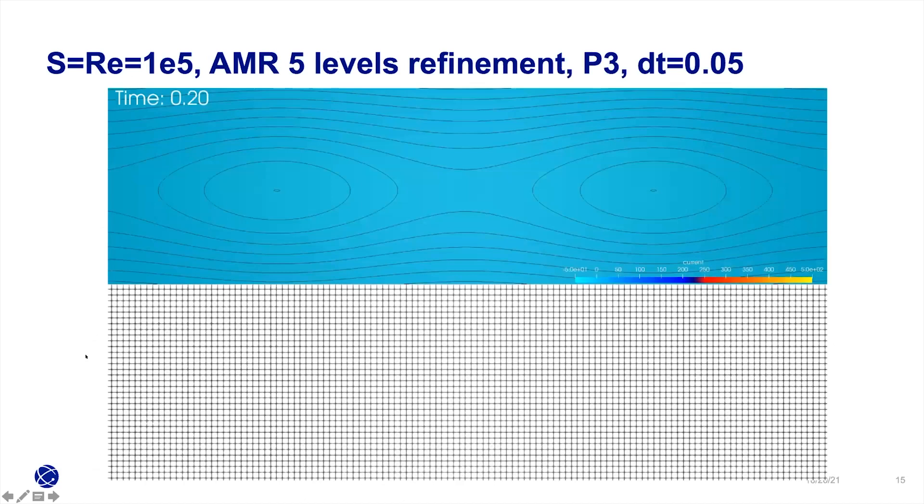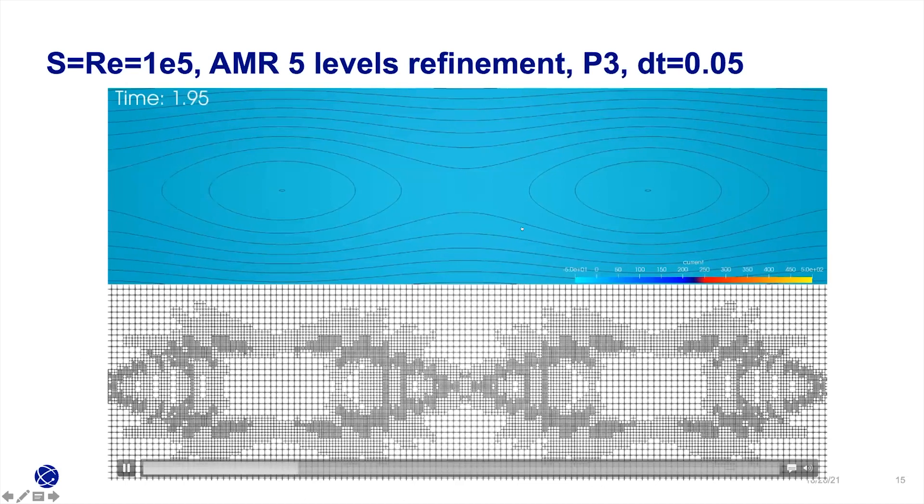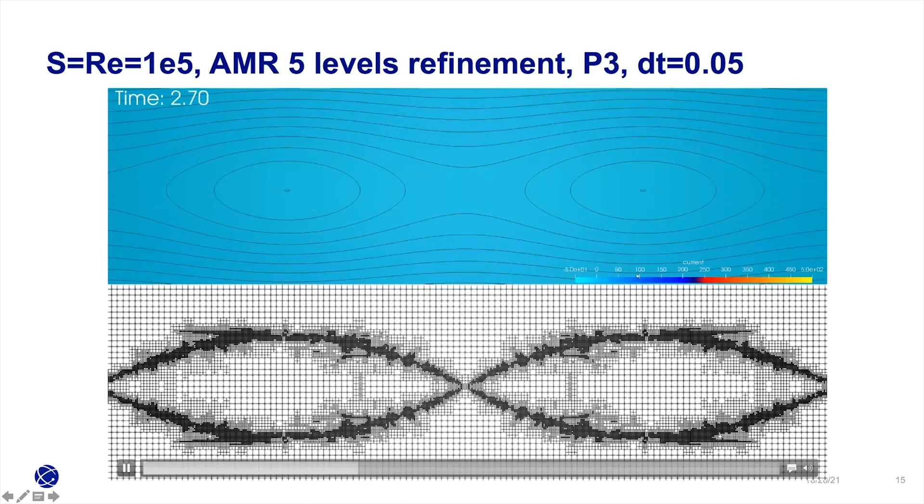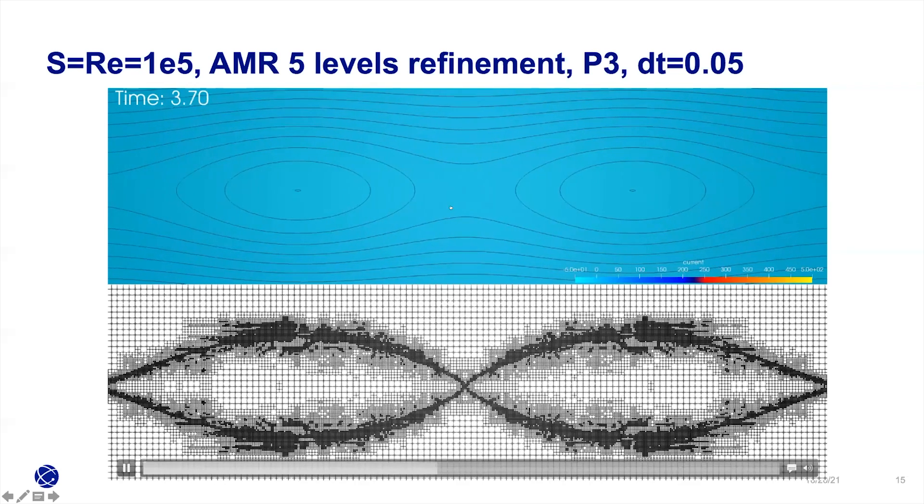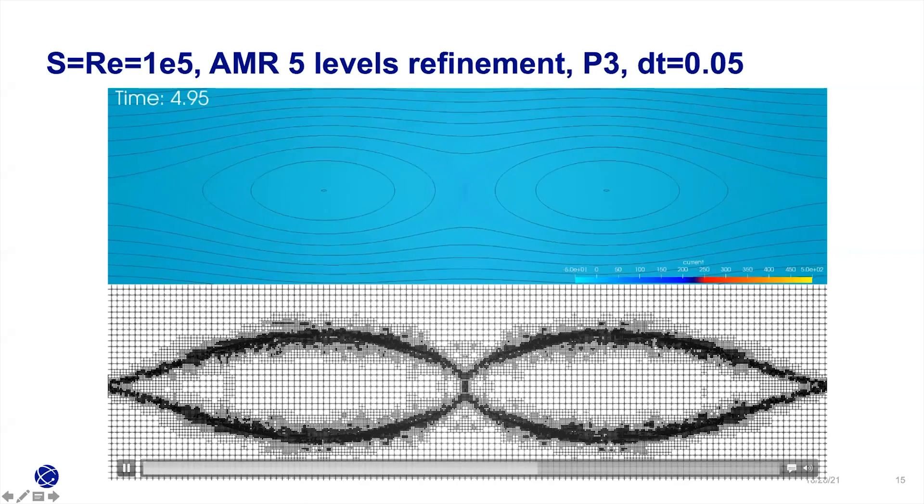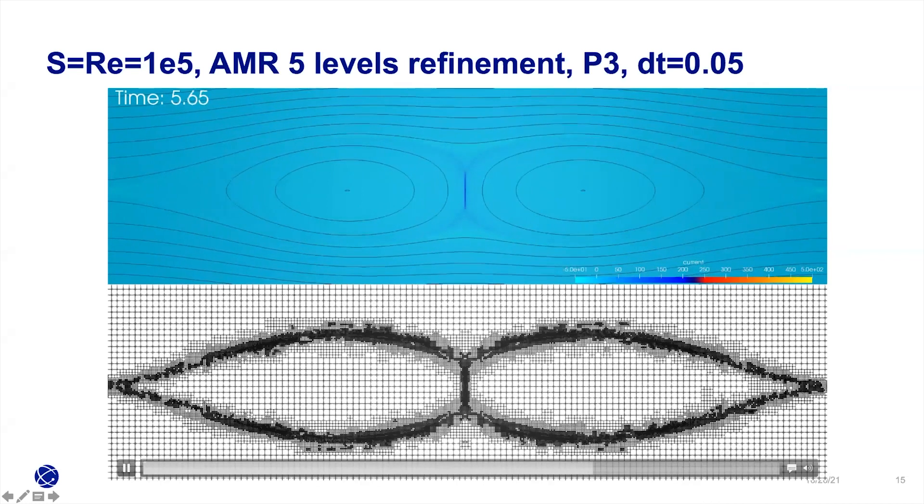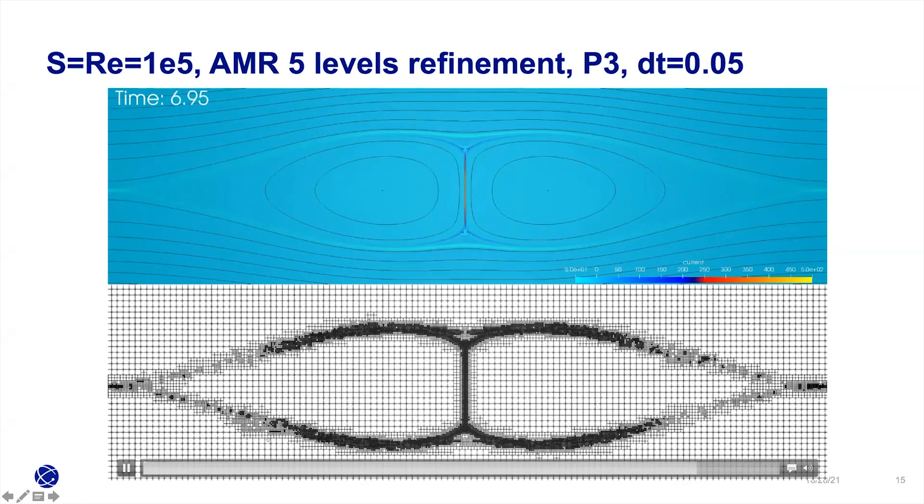As a result, it's a very challenging problem for any code. Now I'll present some results using AMR. Two islands climb into each other, and the field line is scaled from zero to 500. You can see the AMR tries to follow this structure. In the end, there's this very thin current sheet forming, and the AMR tries to capture it. This is a very nice application of AMR in terms of adaptable mesh refinement.